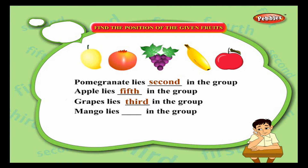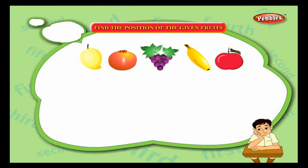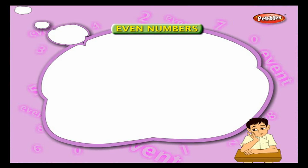Mango lies first in the group. Banana lies in the group: first, second, third, fourth — banana lies fourth in the group. Even numbers: numbers ending with zero, two, four, six, and eight are called even numbers.